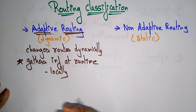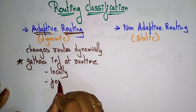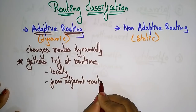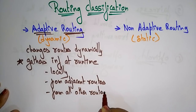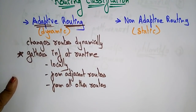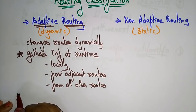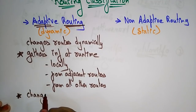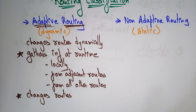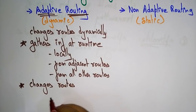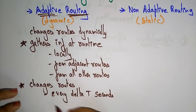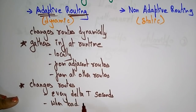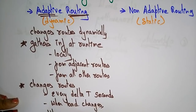Adaptive routing gathers information at runtime — locally, from adjacent routers, or from all other routers. It also changes routes. At every delta-t seconds it can change its routes. Additionally, when the load changes on the router and when the topology changes on the router, it changes its route.